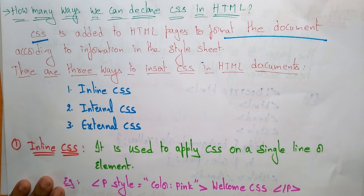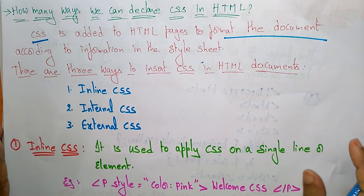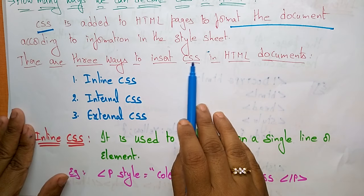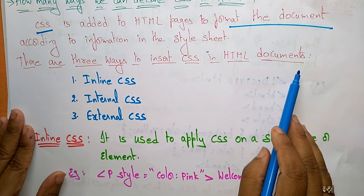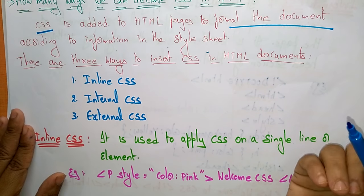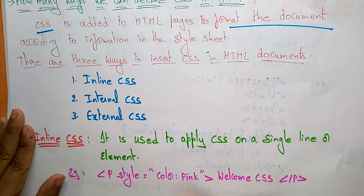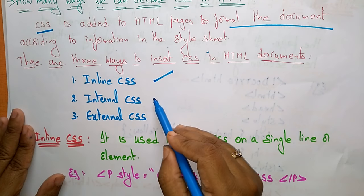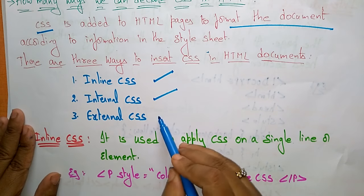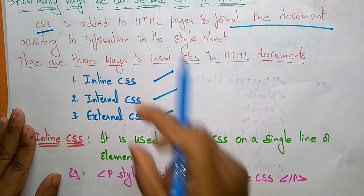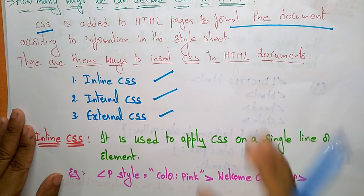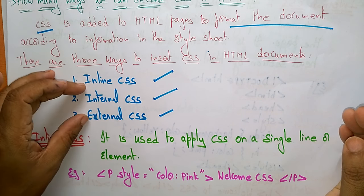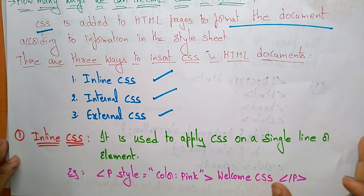There are three ways to insert cascading style sheets in an HTML document. The first is inline cascading, the second is internal cascading, and the third is external cascading. Let's see what these three ways are and how you are going to insert cascading style sheets in an HTML document.